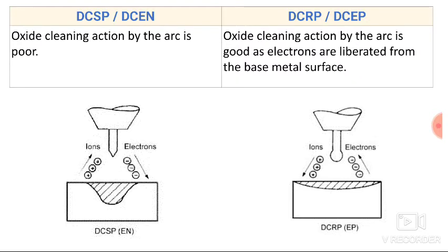In straight polarity, the oxide cleaning action by the arc is poor. As electrons start flowing from the electrode to the work piece, the oxide cleaning action is less.